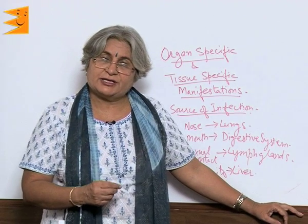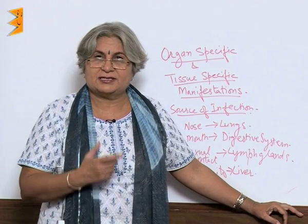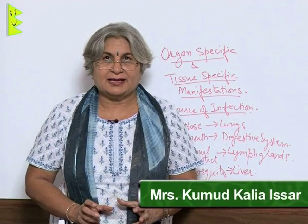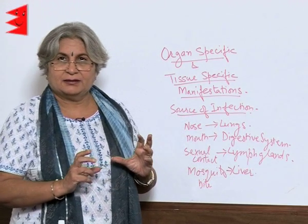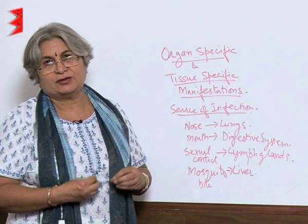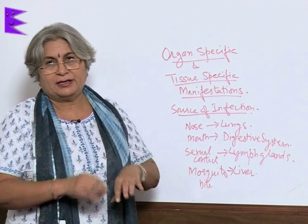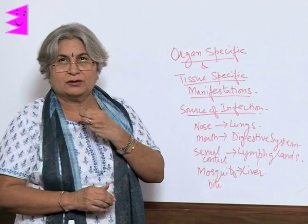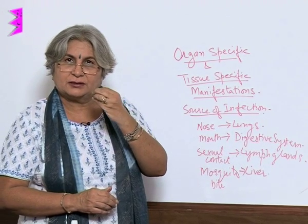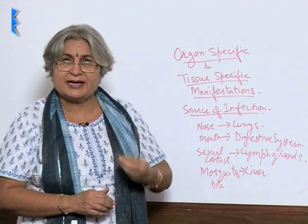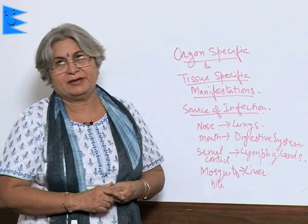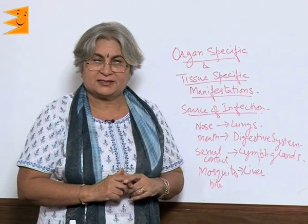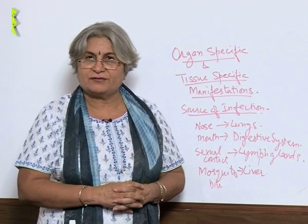How do various tissues and organs get affected? There are certain areas from where pathogens enter our body. It could be a cut in the skin, or it could be the mouth, or it could be the nose, and in some cases of worms it can even be the anus. Basically, where there are openings, there is a chance of infection.